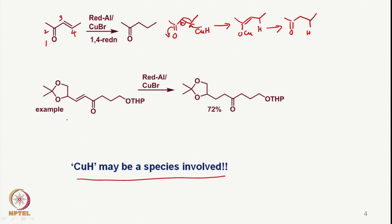In a similar fashion, we can take a somewhat more difficult example and reduce it to the corresponding saturated ketone. There are many such examples in the literature where a copper hydride type of species is believed to be involved in the reduction of alpha,beta unsaturated ketones to the corresponding saturated ketone using Red-Al.